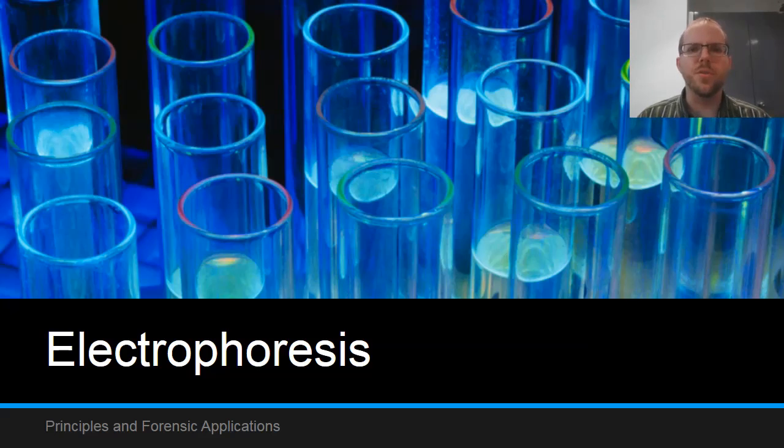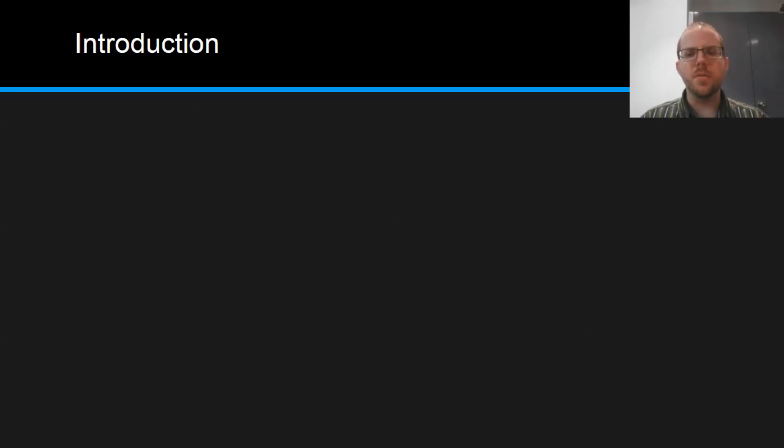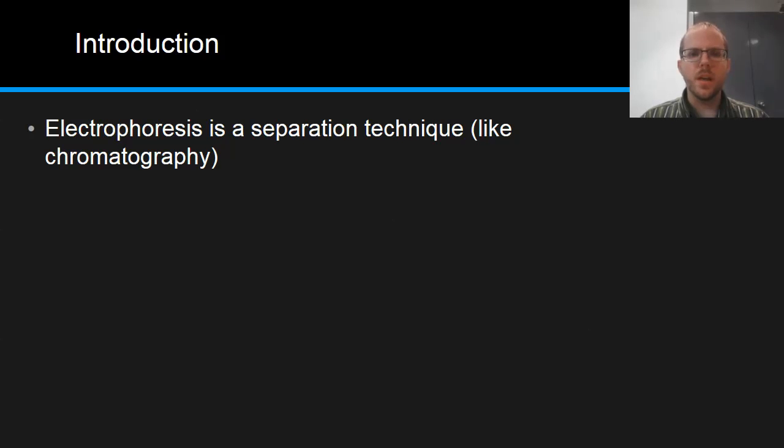Today we're going to be talking about electrophoresis, one of the main separation techniques that a forensic scientist will use for samples that chromatography is not much use for. So we'll be going over the principles and also the applications to forensics. So firstly, a little bit of background about what electrophoresis is. Just like chromatography, electrophoresis is a separation technique, but it's a complementary technique to analyze a whole range of different samples that chromatography is not very useful for, like amino acids and DNA.